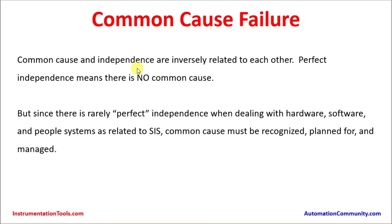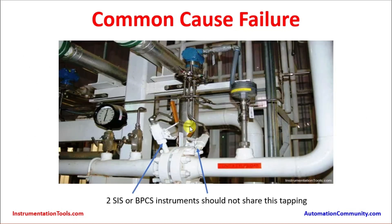Common cause and independence are inversely related to each other. Perfect independence means there is no common cause. An installation with a separate tapping is a perfect independence example, so there is no impact from a second instrument — measurement is entirely separate. However, it is very difficult in plant piping configurations to have similar meters with different connections, so we may need to go with different technology or minimized measurement arrangements.